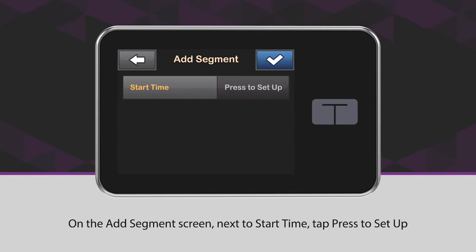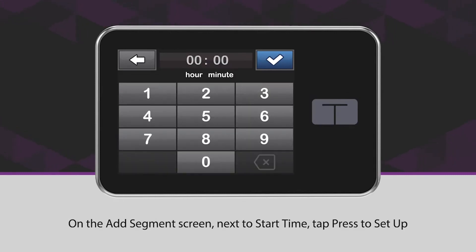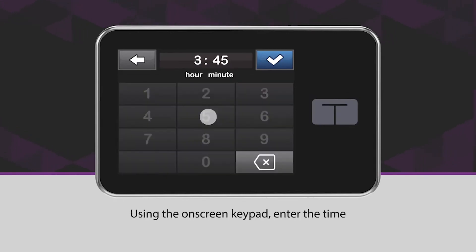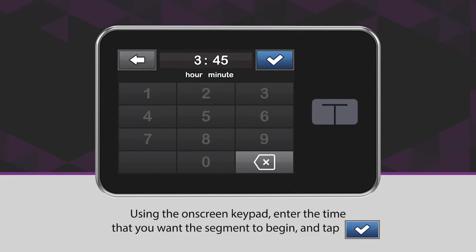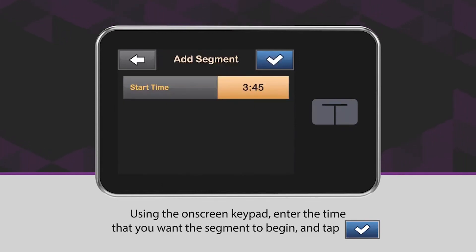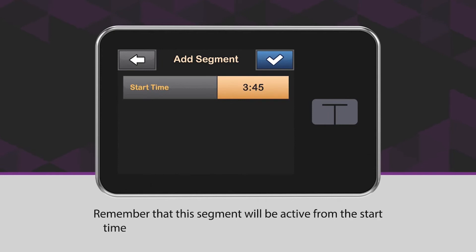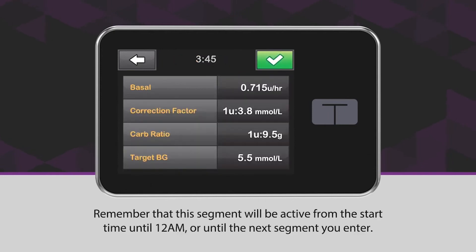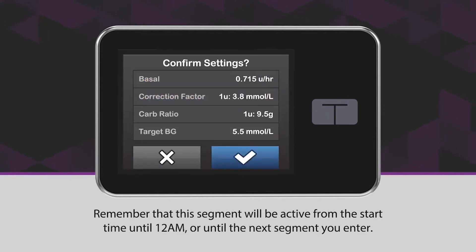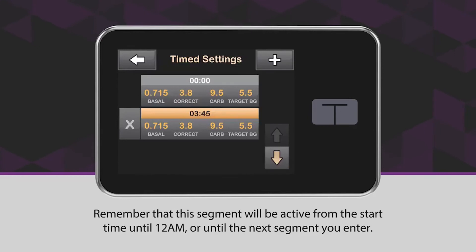On the Add Segment screen, next to Start Time, tap Press to Set Up. Using the on-screen keypad, enter the time that you want the segment to begin and tap the blue checkmark icon. Remember that this segment will be active from the start time until 12 a.m. or until the next segment you enter.